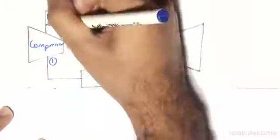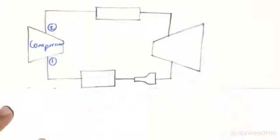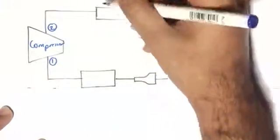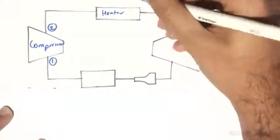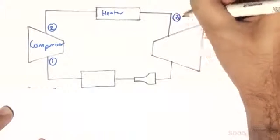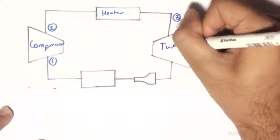And we have state 1 over here. The air leaves the compressor at state 2 and enters this heater of sorts. And then it leaves the heater at state 3, where it enters a turbine at state 4.